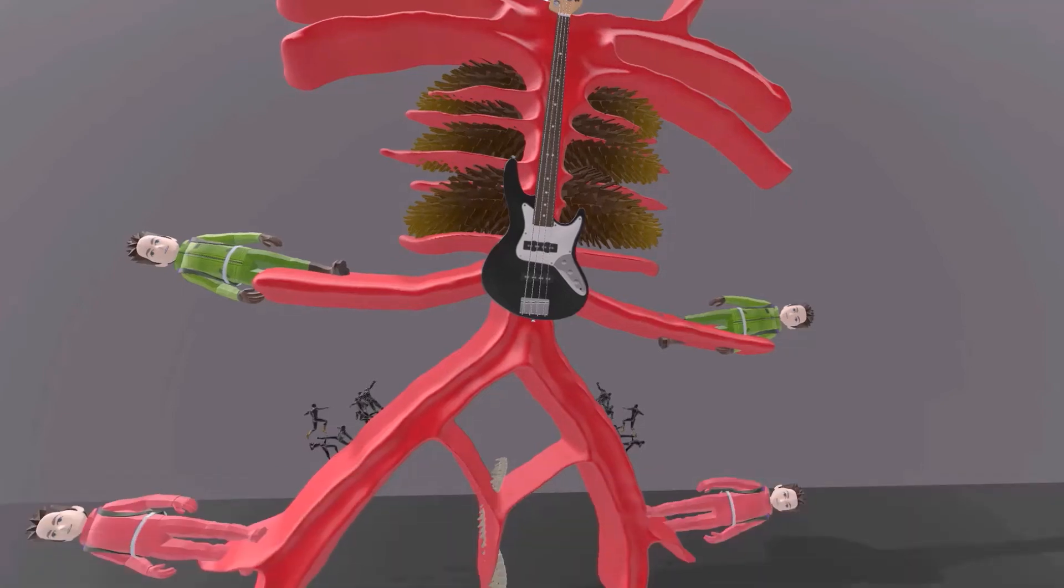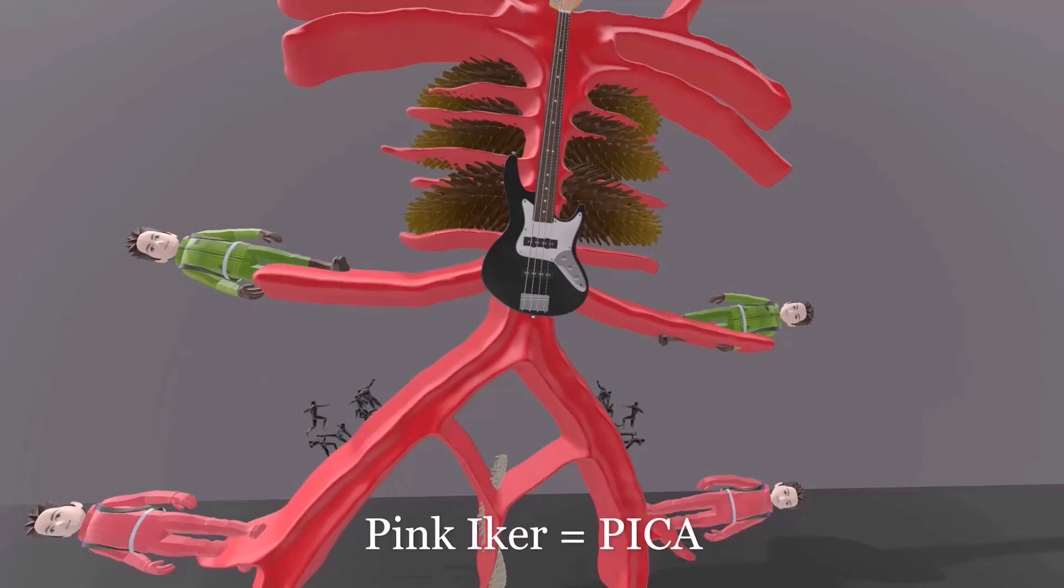And down over here actually we'll have the pink hiker, or the pink ikka. Pink ikka for PICA. This is the posterior inferior cerebellar artery which comes off the vertebral artery.